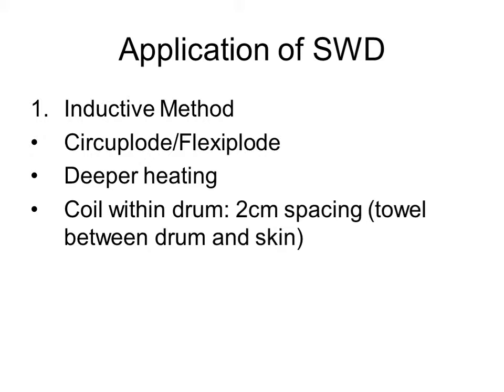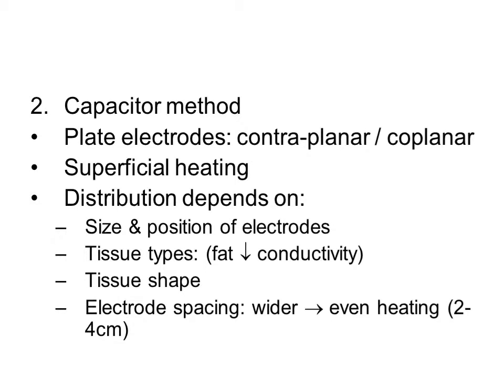Shortwave diathermy may be applied in two different ways. The inductive method is most commonly used using a circuplod — a drum applied at right angles to the tissues — or a flexiplod, an electrode which can be folded to the shape of the body part. Induction causes deeper heating than the capacitive method. Both use an inductive coil inside the electrode and are applied with approximately two centimeters between the electrode and the skin. A folded towel may be used to maintain that space and prevent the buildup of moisture between the drum and the skin surface. The capacitor method uses plate electrodes applied on the same or opposite sides of the body part. This method causes more superficial heating than the inductive method.